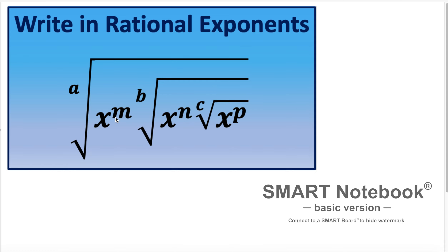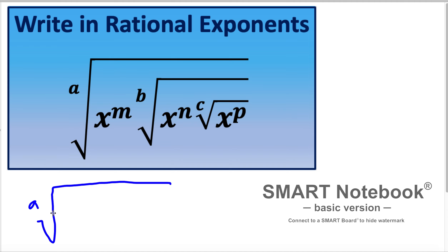We have a given expression which is a nested radical, and we want to write it in rational exponents form. We have x in exponent m, and another radical containing x in exponent n. We want to write this radical in exponential form as rational exponents.